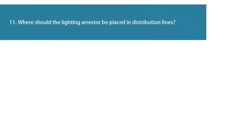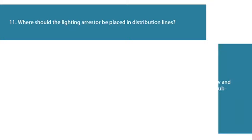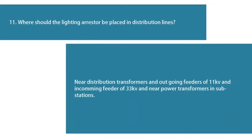Question 11: Where should the lightning arrestor be placed in distribution lines? Near distribution transformers and outgoing feeders of 11kV, incoming feeders of 33kV, and near power transformers in substations.